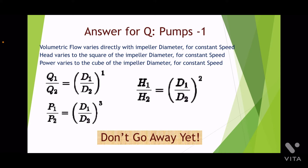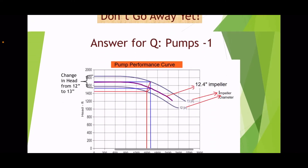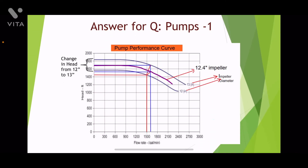Now don't go away yet — here comes the chance to impress your interview team. The question is: how do you use this affinity law? Here is the pump performance curve, and on it is plotted the performance curve for different impeller diameters. The performance for a 12-inch and a 13-inch impeller diameter is plotted. Now if the question is to upgrade an impeller from 12 inches to a higher size, how would we do it?